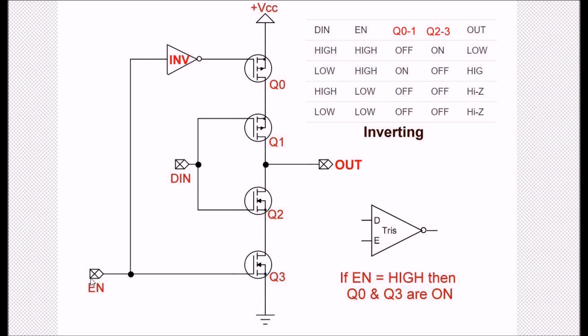If I have a low on the enable, it doesn't matter what the value on DIN is going to be. There's no path to VCC, there's no path to ground, because Q0 and Q3 are turned off and thus it's high Z again.